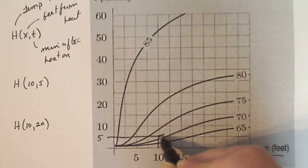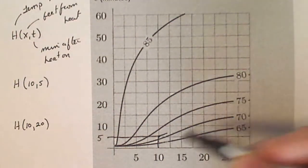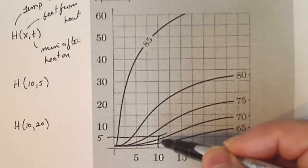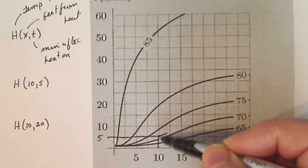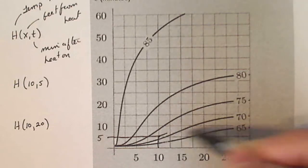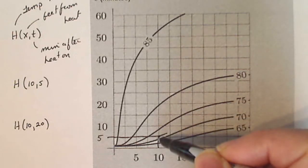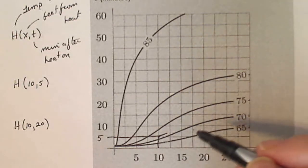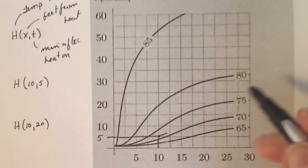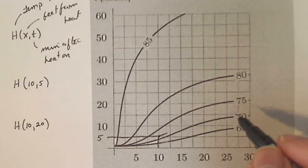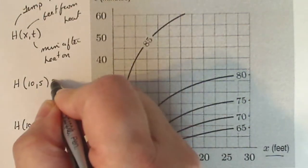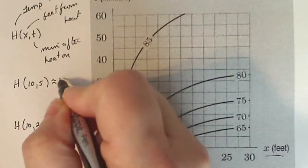And we just have to guesstimate how many degrees it is between here and here. It's five degrees - it goes from 70 from this contour to 75 on this contour, five degrees. And that's approximately two degrees in. So I'm going to say that H of 10,5 is about 72 degrees.